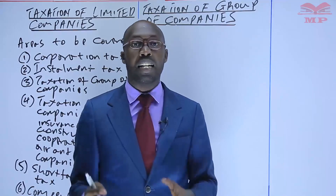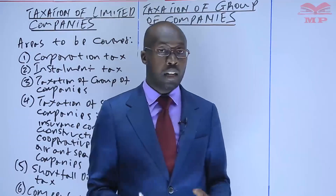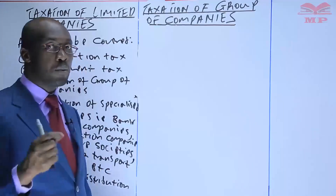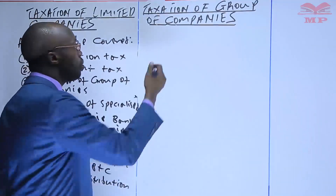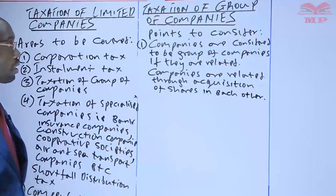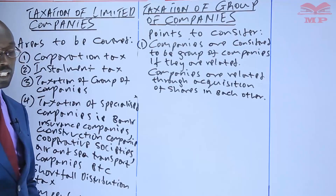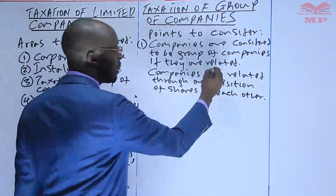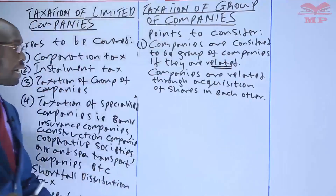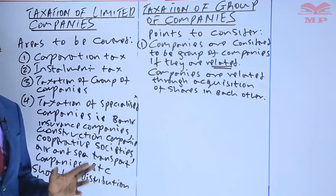So, how does it affect the taxation? That is what we want to look at today. In taxation of the group of companies, the following are the points that you need to consider. Point one: companies are considered to be a group of companies if they are related. The key thing here is if they are related. Companies are related through acquisition of shares in each other.